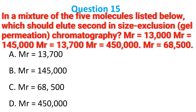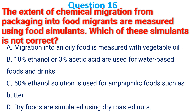In a mixture of 5 molecules listed, which should be eluted second in size exclusion chromatography? The correct answer is A. The extent of chemical migration from packaging into food is measured using food simulants. Which of these simulants is not correct? The correct answer is C: 50% ethanol solution is used for amphiphilic foods such as dairy products.